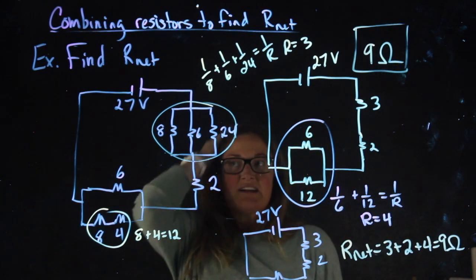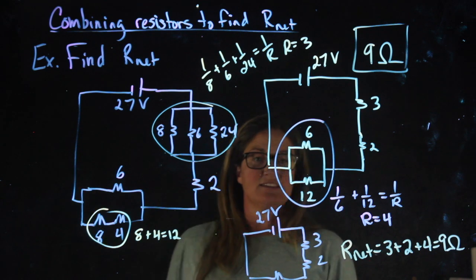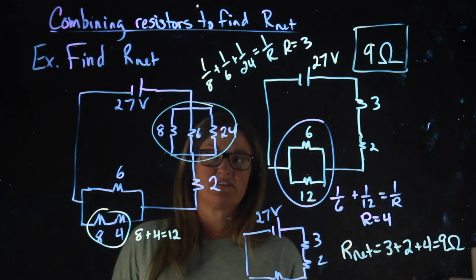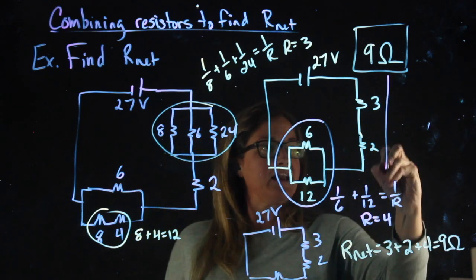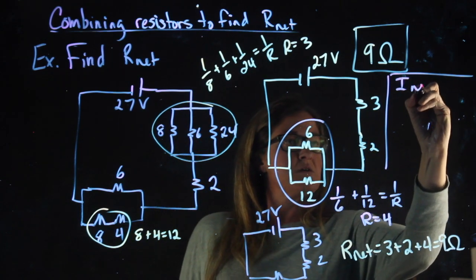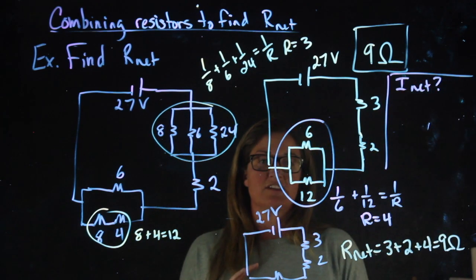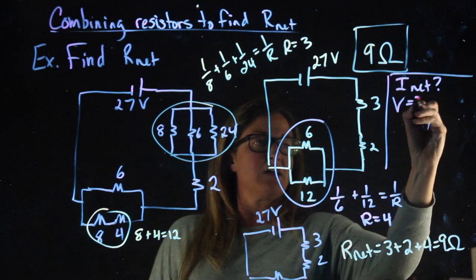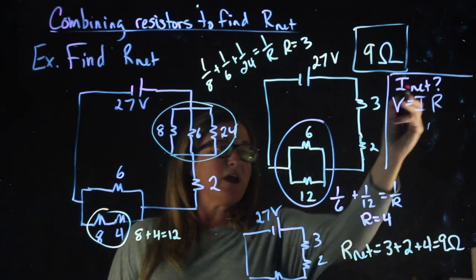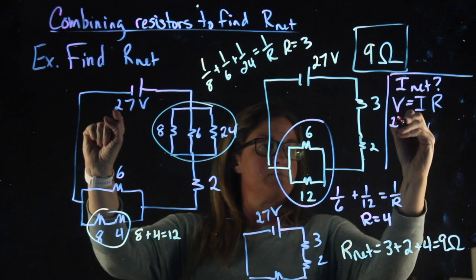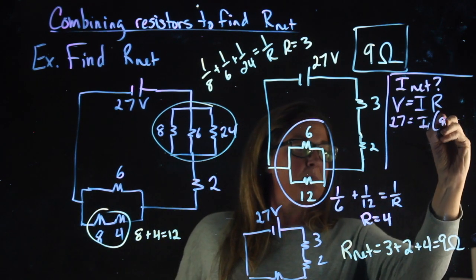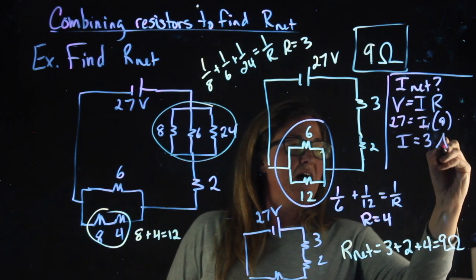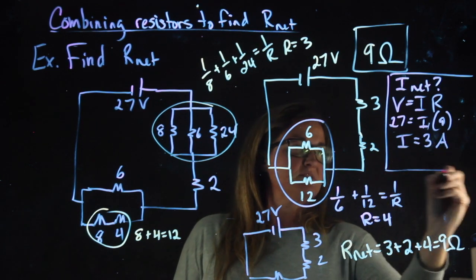I could also ask, I didn't in this case, but it's easy enough to, I could ask you for the current in the circuit, or Inet. If I wanted to find Inet, like you saw in the previous problems, I'm using Ohm's law. If I want Inet, I use the voltage of the battery and I use Rnet. And we get I equal to 3 amps.